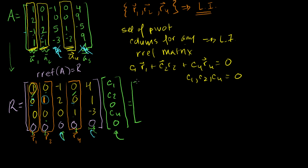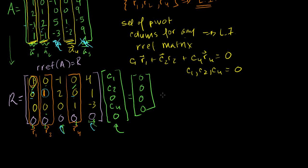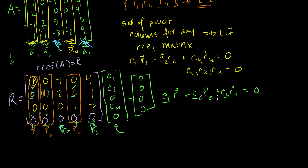Expanding this out, we get c1 times r1, plus c2 times r2, plus 0 times r3, plus c4 times r4, plus 0 times r5, all equal to zero. The only solution to this — because these three pivot columns are linearly independent — is that all of those coefficients equal zero. So if we constrain the zero entries, c1, c2, and c4 must all be zero.